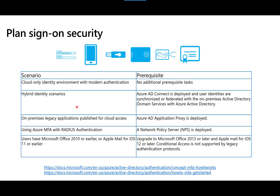You'll be required to know different methods of implementing security for sign-on scenarios. For example, how would you provide secure logon access to an on-premises legacy application? In that scenario, you might use an Azure AD Application Proxy. For implementing Azure MFA with RADIUS authentication, a Network Policy Server is required, and it's important to know the steps involved in that implementation. Read through the links on the page to understand these and other sign-on scenarios.